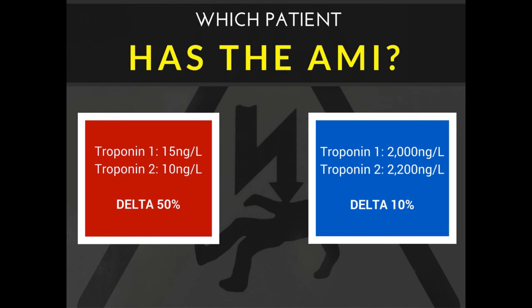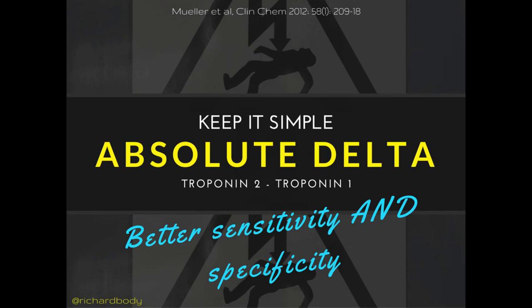Here's the reason: a relative change of 20% biases you towards diagnosing very small MIs that are more likely to be non-AMI positives, and biases you against diagnosing the big MIs. For example, a patient with results of 15 then 10 gives a delta of 50% — it meets criteria for acute MI, but that 5 nanogram per litre change could just be assay imprecision. Whereas a patient who went from 2000 to 2200 has a 200 nanogram per litre change on serial sampling, but the delta is only 10% — so you wouldn't diagnose acute MI. Instead of using the relative delta, we've recognised that the absolute change is better.